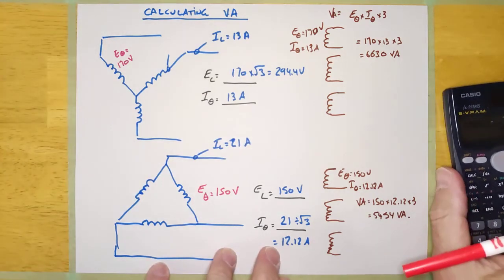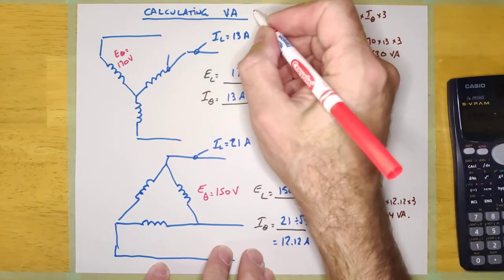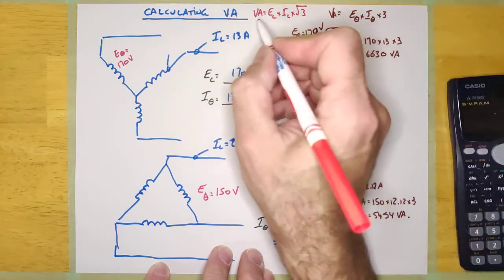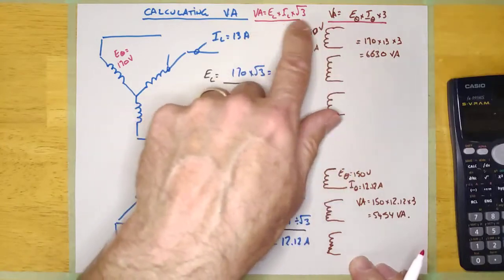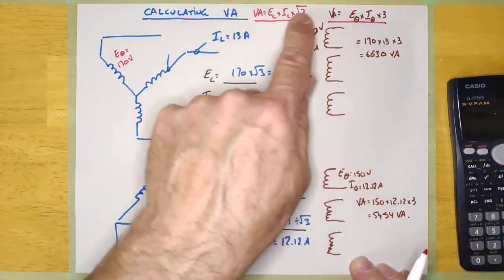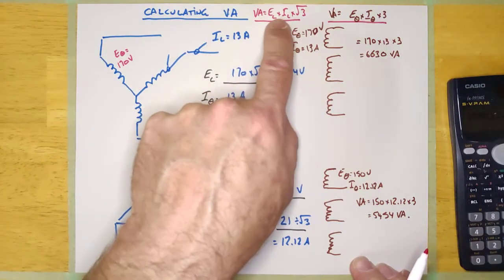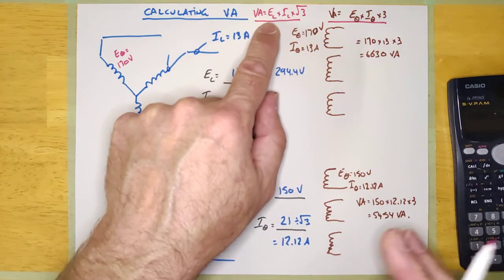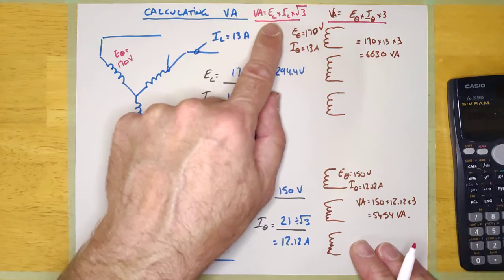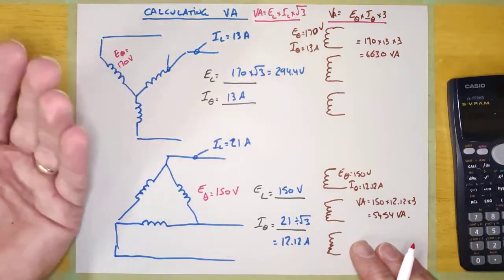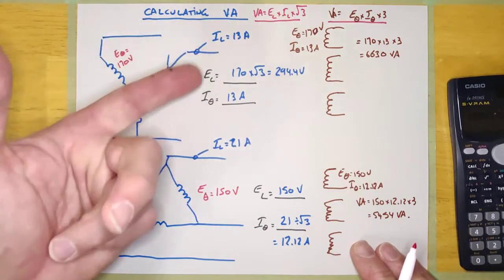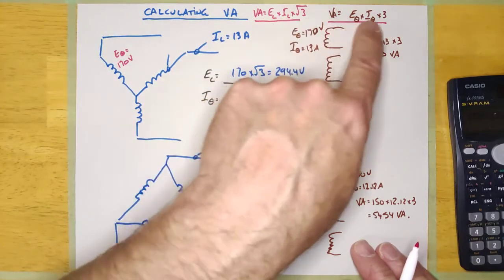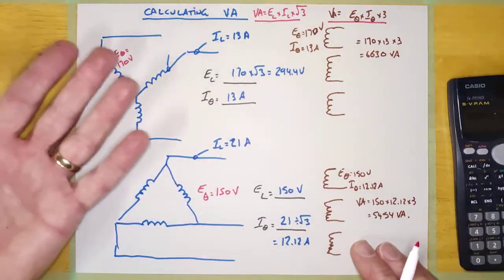There's an alternate formula which you might find handier: VA = E_line × I_line × root 3. Those two formulas will always allow you to calculate the VA for any three-phase transformer. This second one is usually easier because electricians most often know the line voltage and line current — a transformer nameplate will show line voltages and line current, and you don't even need to know whether it's wired Y or Delta.